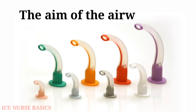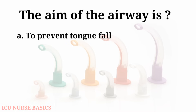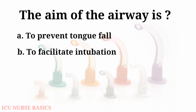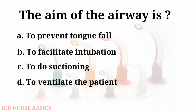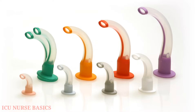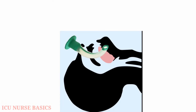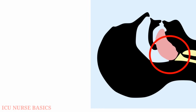The aim of the oral airway is: A. To prevent tongue fall, B. To facilitate intubation, C. To do suctioning, D. To ventilate the patient. And the answer is A, to prevent tongue fall. The airway prevents the tongue from falling back to the posterior pharyngeal wall, thus preventing respiratory obstruction.